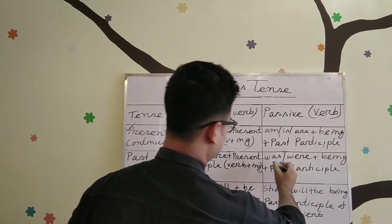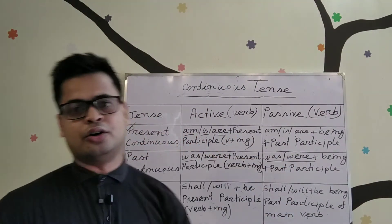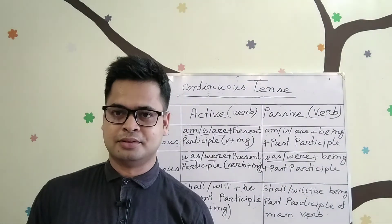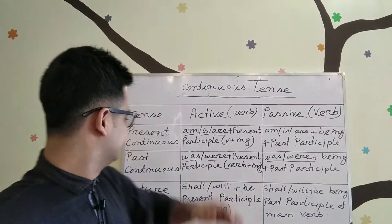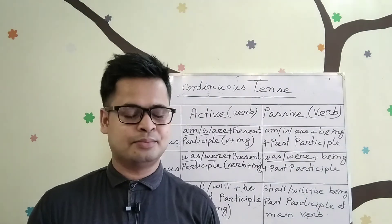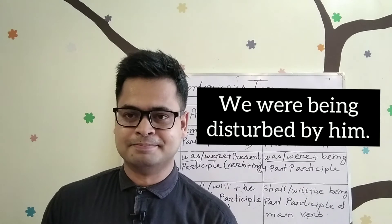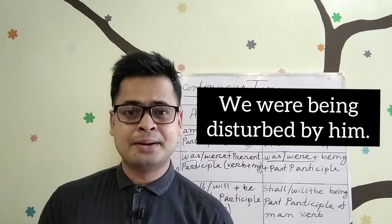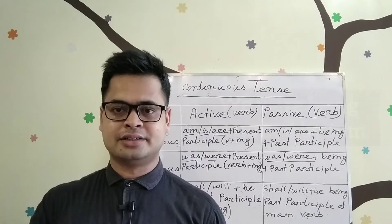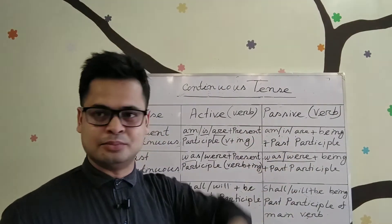In passive voice for past continuous tense, we use 'was/were' plus 'being' plus the past participle. For example: 'We were being disturbed by him.' 'Were being disturbed' is the verb form used in passive mode for past continuous tense.